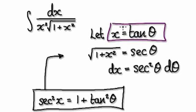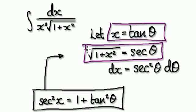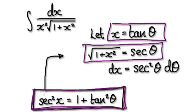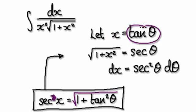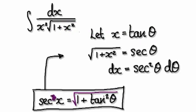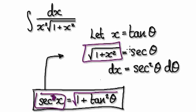If we let x equal tan(θ), we can automatically make a trigonometric identity statement — one we've seen before. If you square root both sides of that identity, you get a simplified expression. Then if you substitute tan(θ) in for x, you get tan²(θ) plus 1 inside the square root, which allows us to make an important simplification.